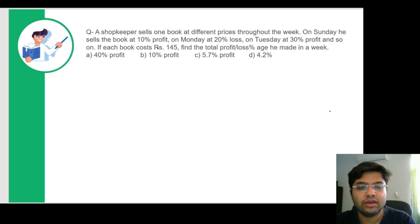So let's start with this question. A shopkeeper sells one book at different prices throughout the week. On Sunday he sells the book at 10% profit, on Monday at 20% loss, on Tuesday at 30% profit and so on. If each book costs Rs 145, find the total profit or loss percentage he made in a week.